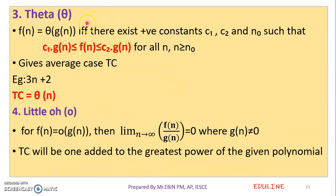Next is theta, another asymptotic notation. The definition: f of n is equal to theta of g of n if there exist positive constants c1, c2, and n0 such that c1 into g of n is less than or equal to f of n, which is less than or equal to c2 into g of n, for all n where n is greater than or equal to n0. Theta represents the average case time complexity.